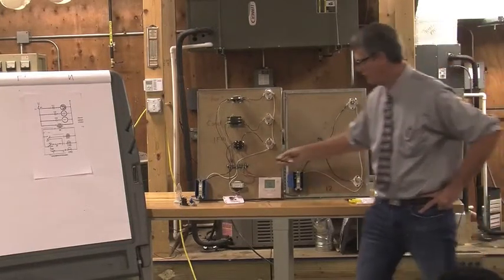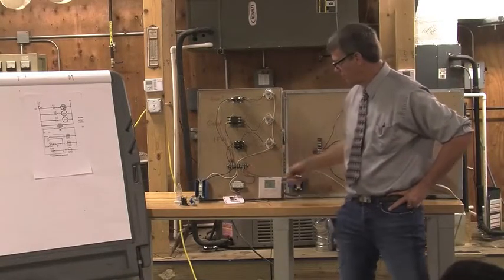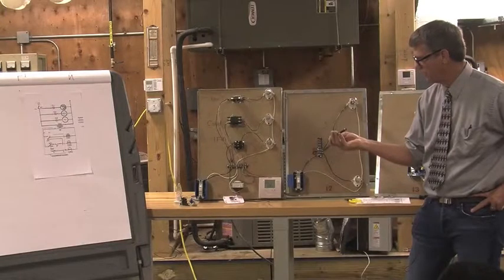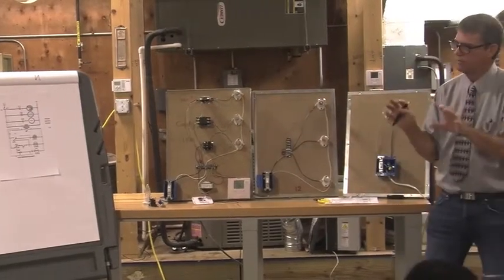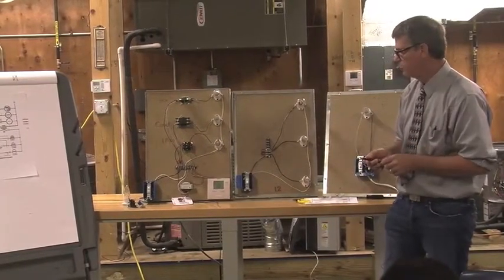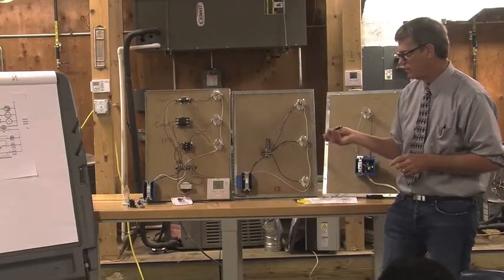This is a good example of how a furnace will look. We'll have a terminal strip, and so from the terminal strip we will take R and common into the thermostat and land them on R and C in the thermostat, so we're going to feed the thermostat with 24 volts.